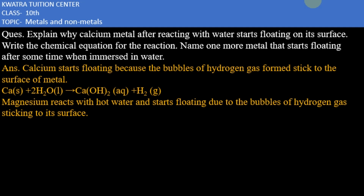The question is: explain why calcium metal, after reacting with water, starts floating on its surface. Write the chemical equation for the reaction. Name one more metal that starts floating after some time when immersed in water.